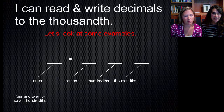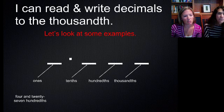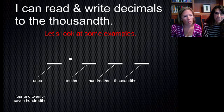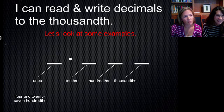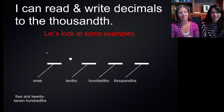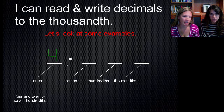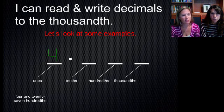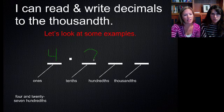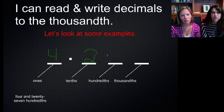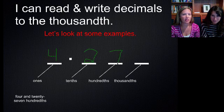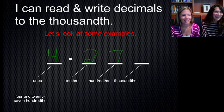Here's a few examples. If I said 4 and 27 hundredths, what would that look like? So we have 4 and, and then I've got 27 hundredths. So my 27 hundredths, the 7 is going to end in the hundredths place. So 4.27.